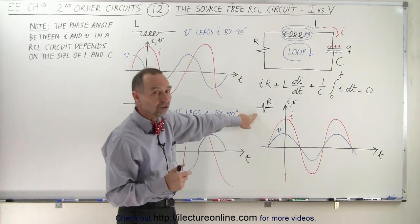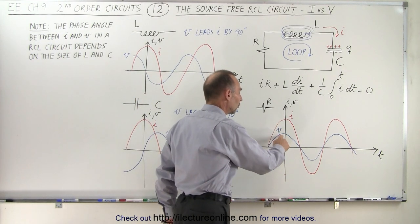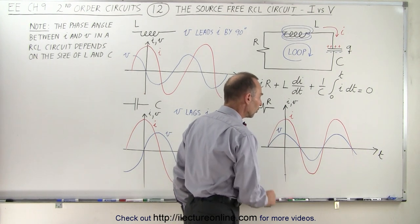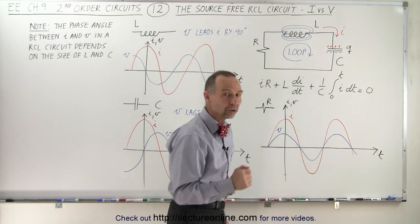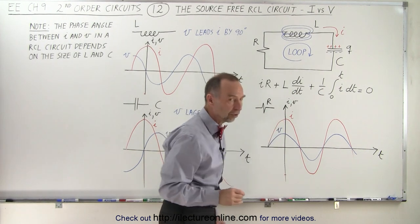It turns out, across the resistor, there's no phase difference whatsoever. When current reaches a maximum value, so does the voltage across the resistor. When the current goes to zero, so does the voltage. When the current goes to the maximum negative value, so does the voltage as well. There's zero phase difference between the current and the voltage across the resistor.